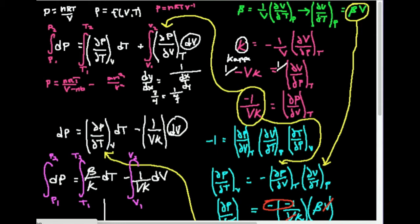Kappa is the isothermal compressibility — it's related to how volume changes when you vary pressure at constant temperature. The other constant I want to define is beta, called the isobaric thermal expansion. It describes how the volume changes when you change temperature at constant pressure: beta equals one over V times the partial of V with respect to T at constant P. Solving for the derivative, the partial of V with respect to T at constant P equals beta V.